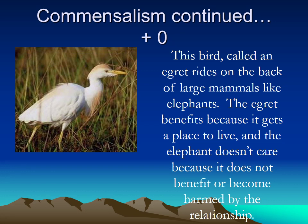Here's a bird called an egret that rides on the back of large mammals like elephants. The bird benefits because it gets a place to live short-term, but the elephant doesn't really mind — it doesn't feel the bird, it's not hurting or helping the elephant. Another example of commensalism: one gets something good, the other gets absolutely nothing.